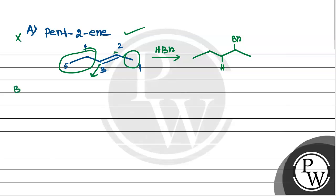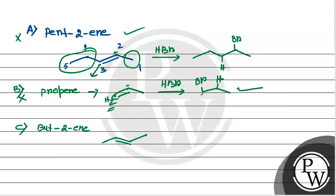In option B, propene is unsymmetrical. If we add HBr, hydrogen will go to the more substituted carbon and bromine to the less substituted carbon. This is Anti-Markovnikov addition, so the answer is not B.